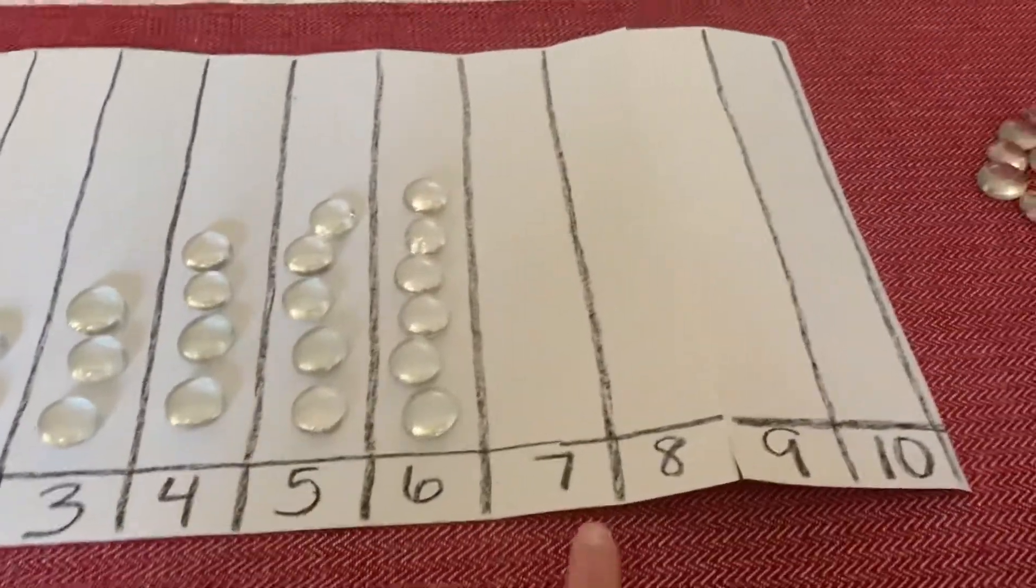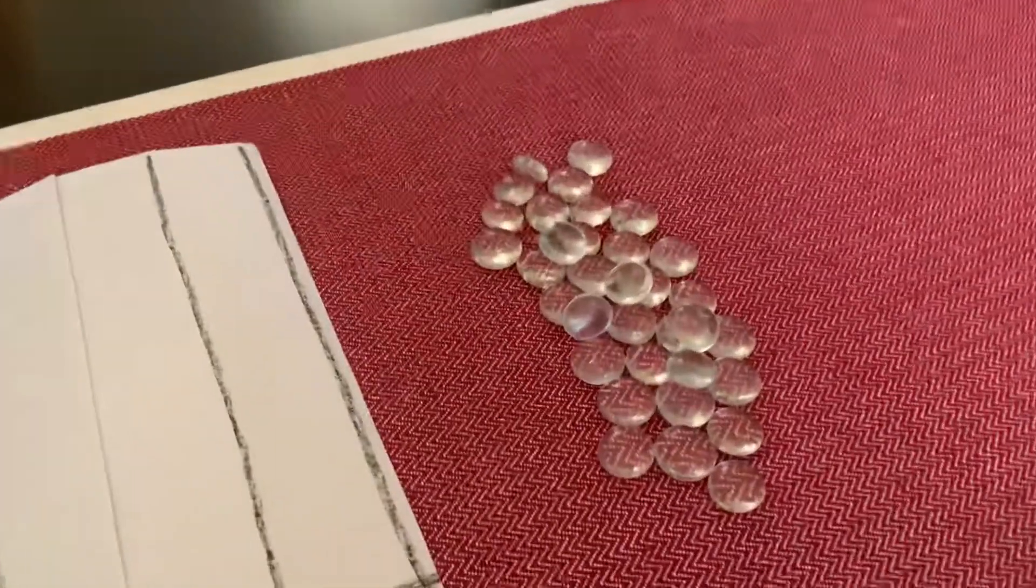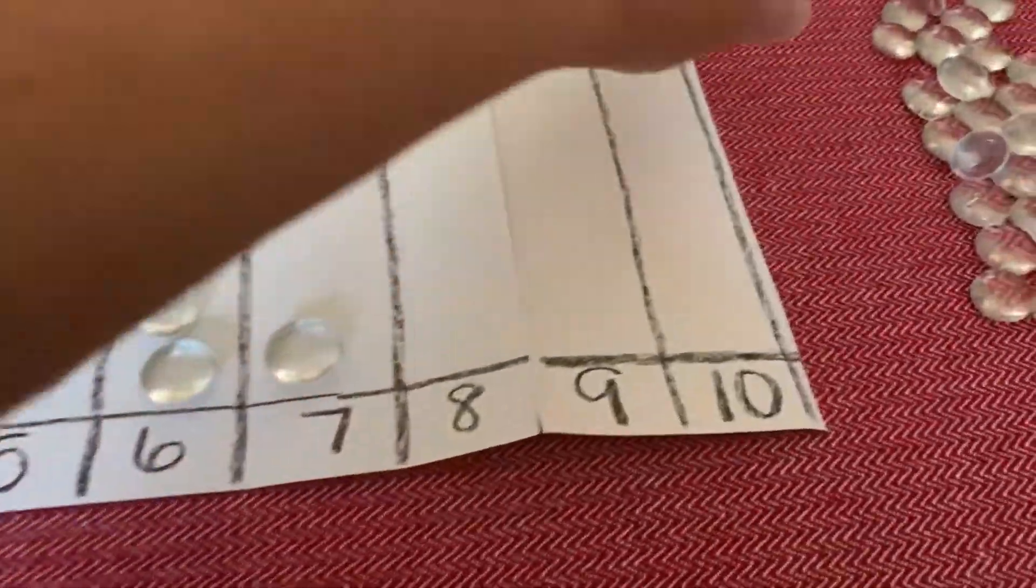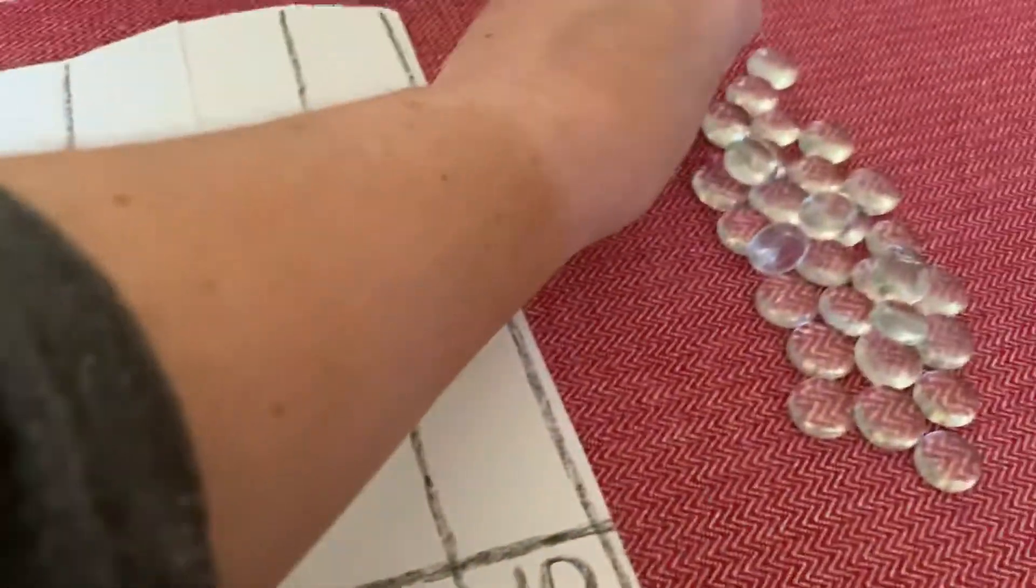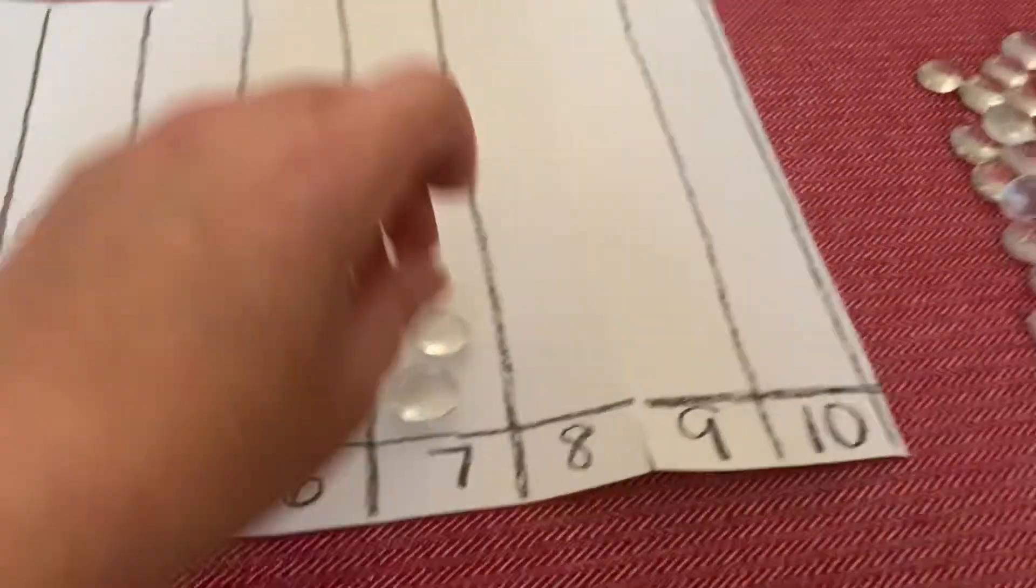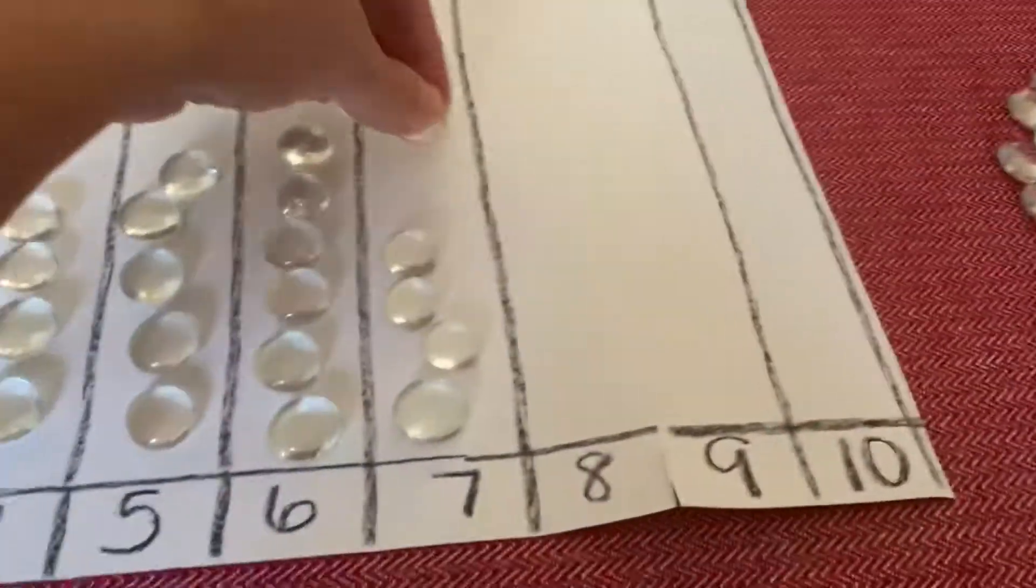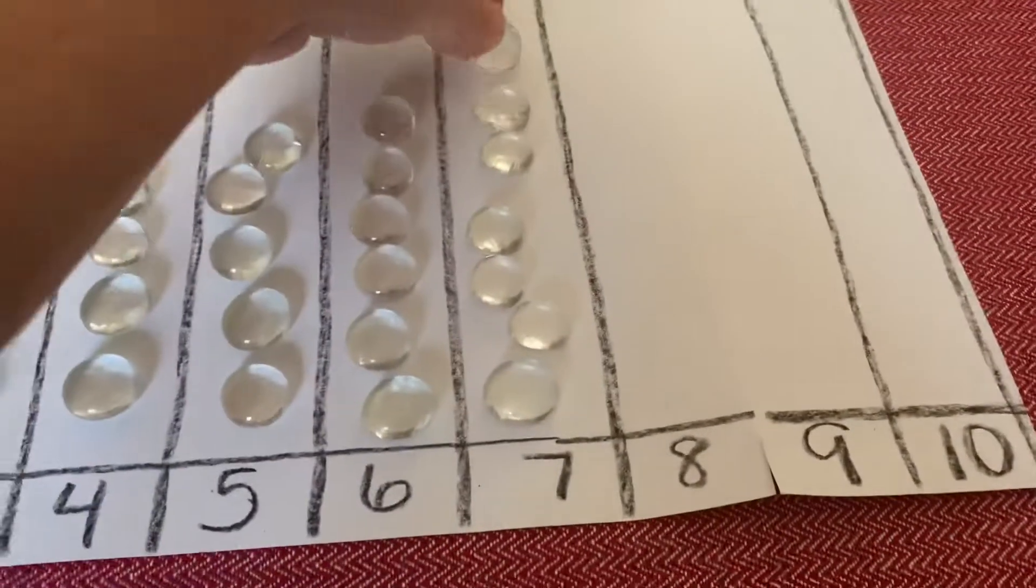All right, what number comes next? The number 7. Here we go, boys and girls, ready? 1, 2, 3, 4, 5, 6, and 7.